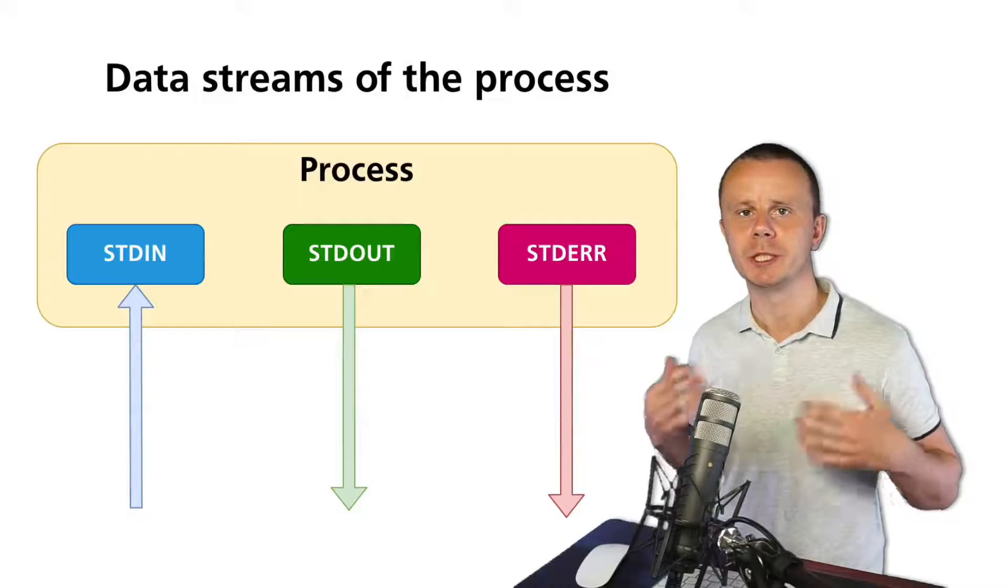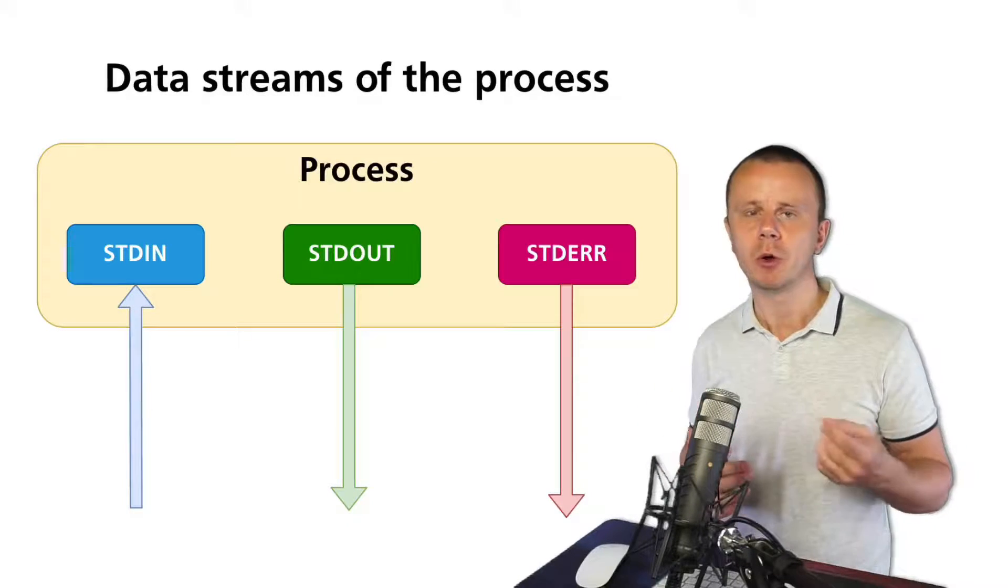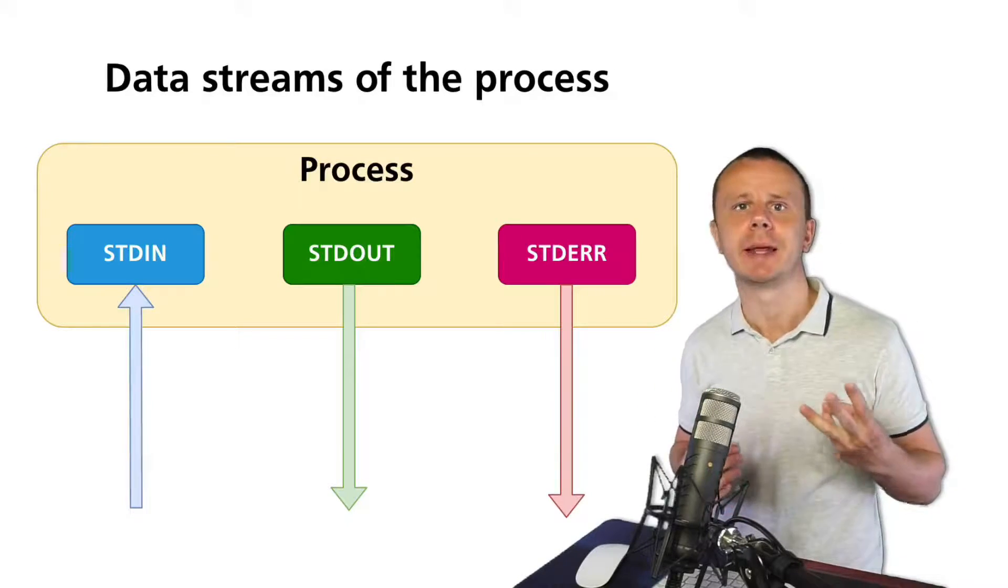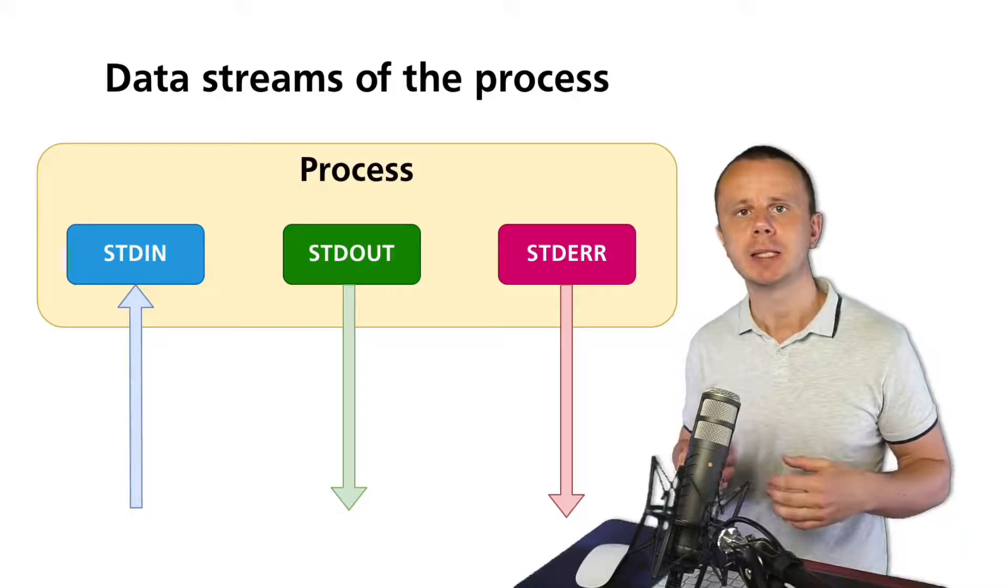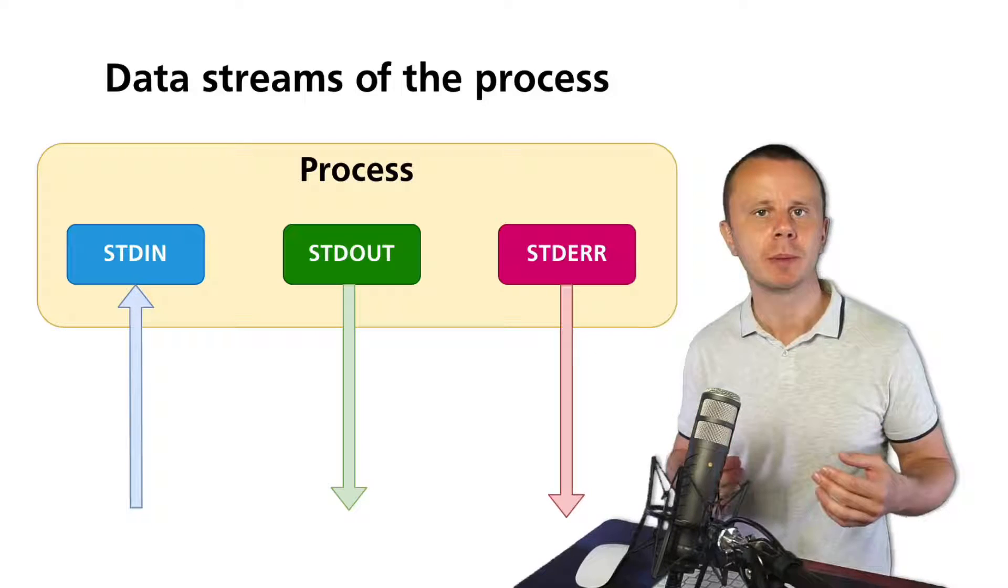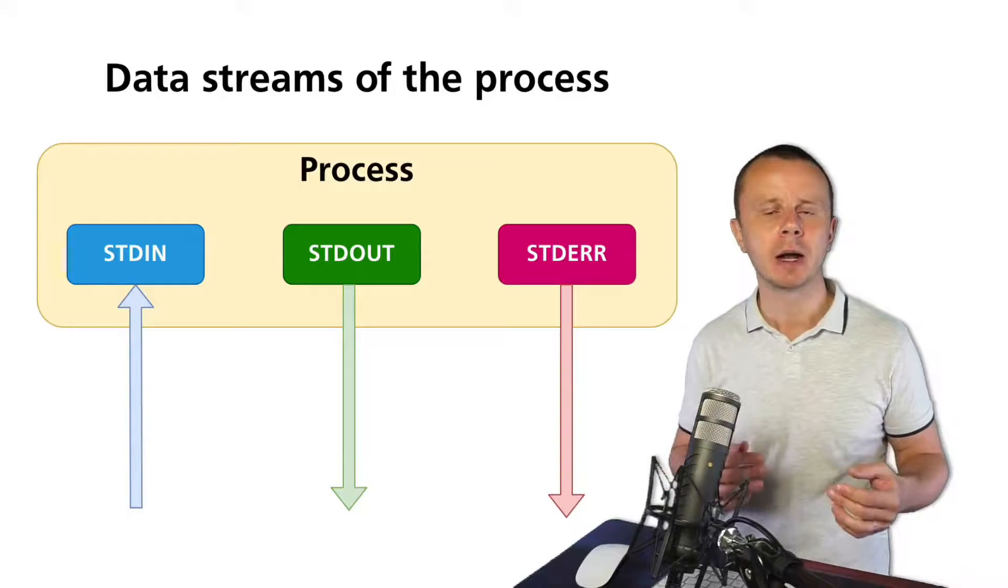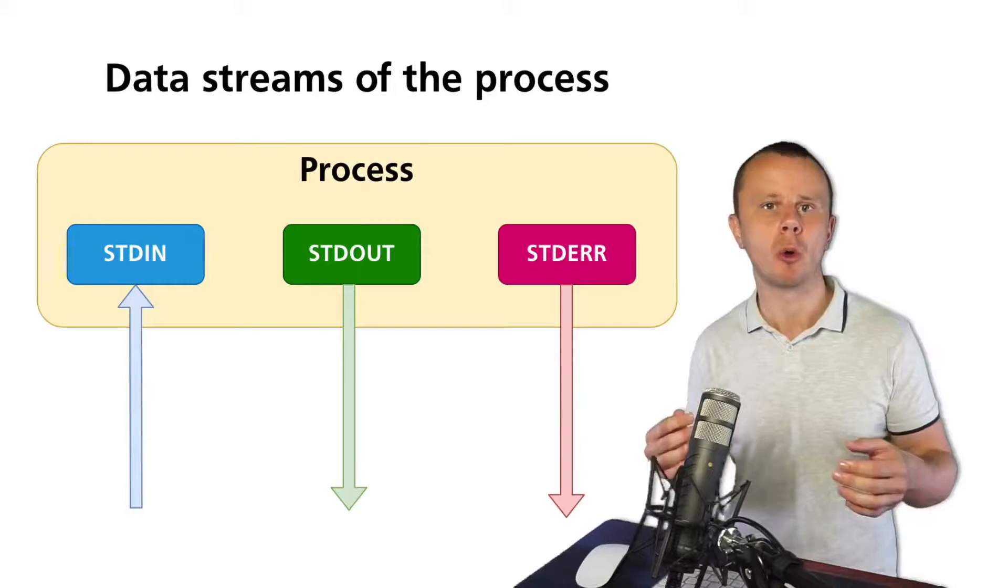Let's briefly summarize what we discussed in previous lectures. First, every process has three different data streams: stdin, stdout, and stderr. Stdin is the incoming data stream. Stdout and stderr are two different outgoing data streams from every process.